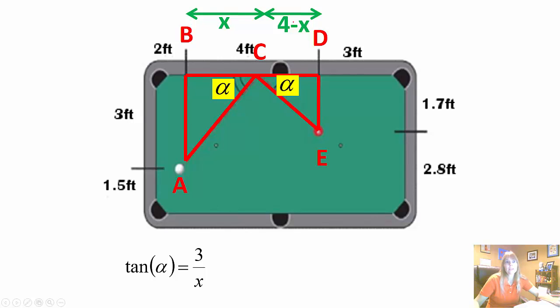All right, and then next I can look at the other side and say well if all of this is 4 and that's x then that would be 4 minus x. And I can set up my tangent 1.7, notice that's right there, so that's my opposite and then over my adjacent. Since both of these are the same angle, tangent of alpha, we can set these equal to each other and that's what I'm going to do.